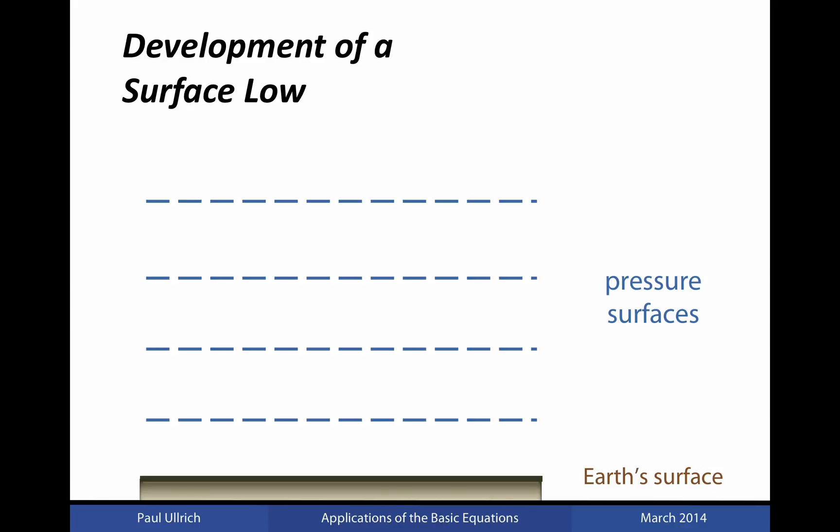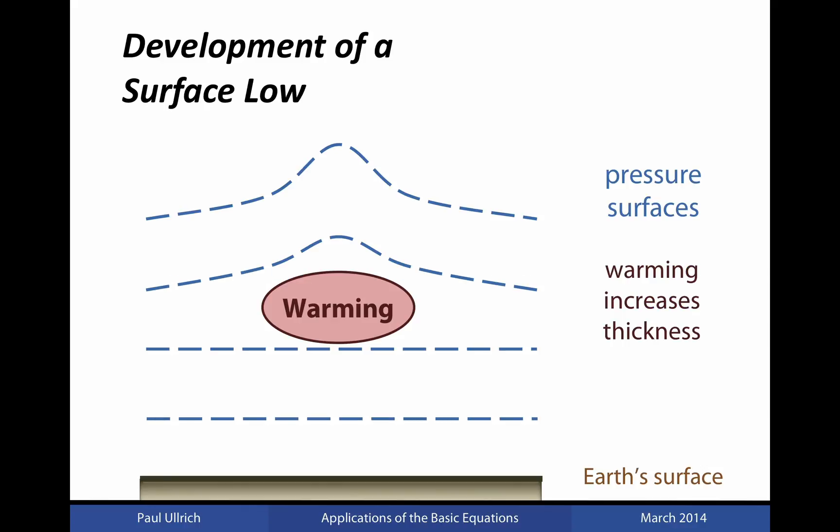Okay, now let's look at how this surface low develops. We have pressure surfaces here denoted with dashed blue lines, and the Earth's surface down at the bottom with the thick brown line. Let's assume that some initial warming occurs within the mid-troposphere. This warming then leads to an increasing layer thickness in response to the hypsometric equation.